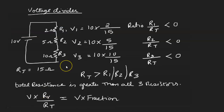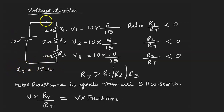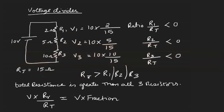In my last video I showed you how to use the voltage divider. I'm going to recap the concept we did in the last video. Here I have a voltage source of 10 volts and three resistors R1, R2, R3 with resistances 2 ohm, 5 ohm, and 10 ohm. The total resistance of this circuit is 15 ohm, and the total resistance of the circuit is always greater than all the individual resistors.